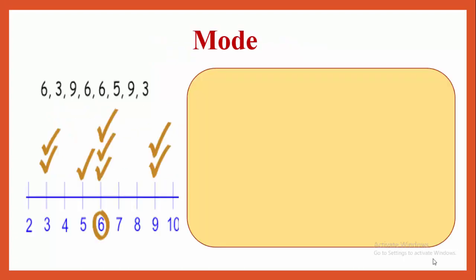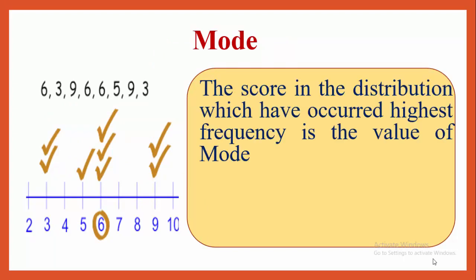The third measure of central tendency is mode. The score in a distribution which has occurred with the highest frequency is the value of mode. Look at the picture — raw scores given are 6, 3, 9, 6, 6, 5, 9, 3. The repeated number is 6, so mode is equal to 6. As compared to other scores, 6 occurs 3 times, so in this series mode is equal to 6.